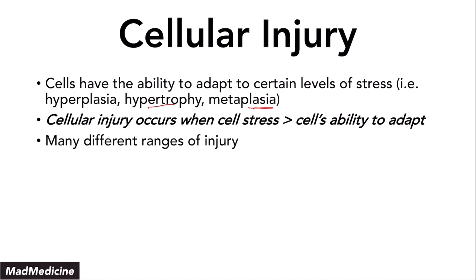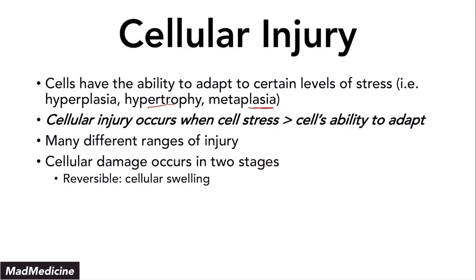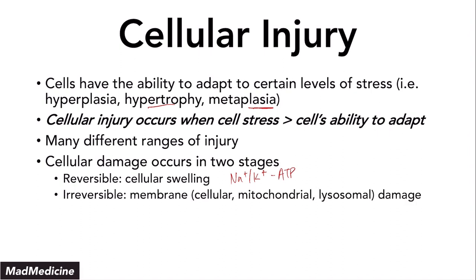There are many different ranges of injury, but the two main things you need to know are that you have cellular damage occurring in two stages. The first stage is reversible damage, where cells swell up due to blocking the sodium-potassium ATP pumps, causing more sodium inside the cell, meaning the cell will swell. If you do not remove the stress, you will go to the irreversible stage where you have cellular membrane, mitochondrial, and lysosomal membrane damage occurring.